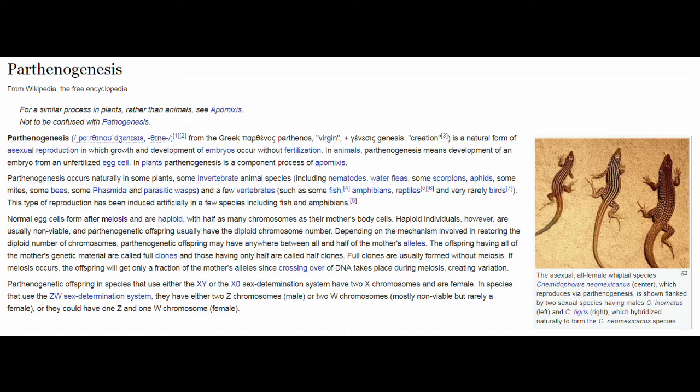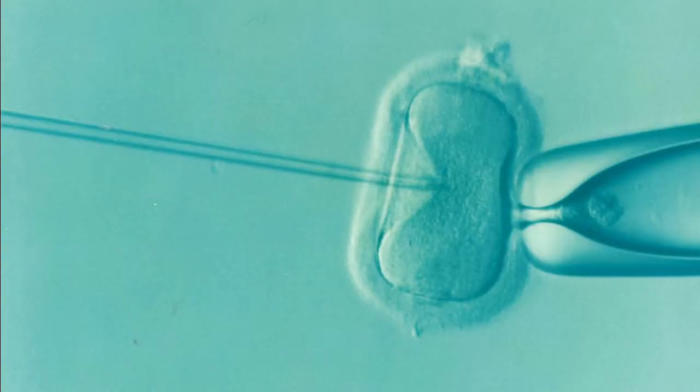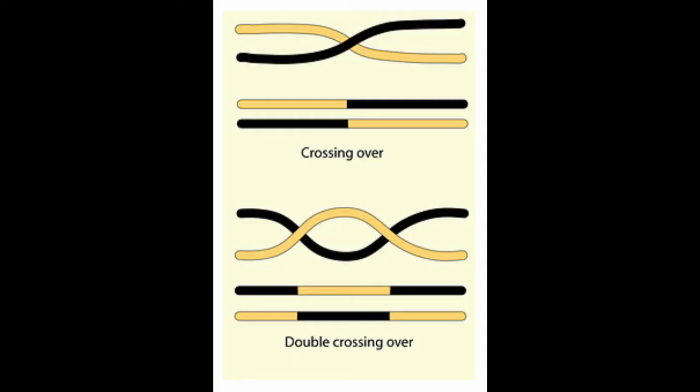Parthenogenesis is a kind of sexual non-sexual reproduction. As confusing as that description is, it will make sense shortly. The distinguishing feature between sexual and non-sexual reproduction is whether or not a second set of genes are added to and mixed during crossover.